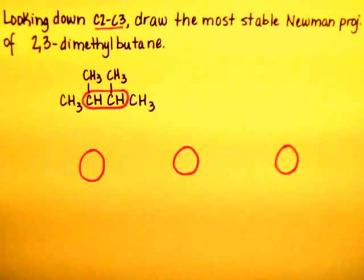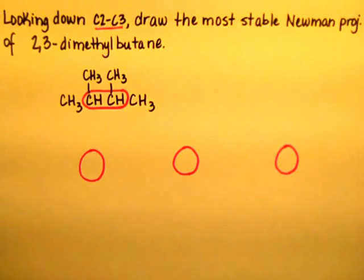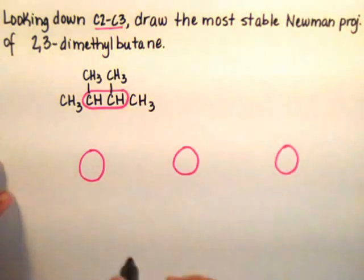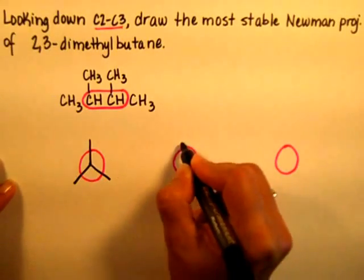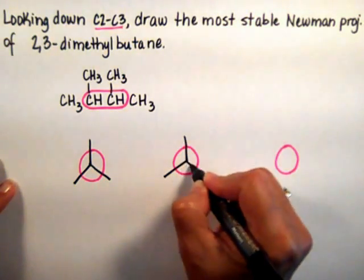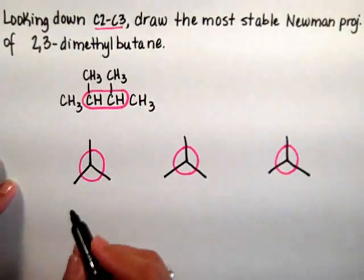Alright, I'm going to start right here. One of them is the front carbon, the other one is the back carbon. Since I want the most stable one, I know it's going to be a staggered conformation, one of them. So I'm going to draw the 3 staggered conformations for 2,3-dimethylbutane.